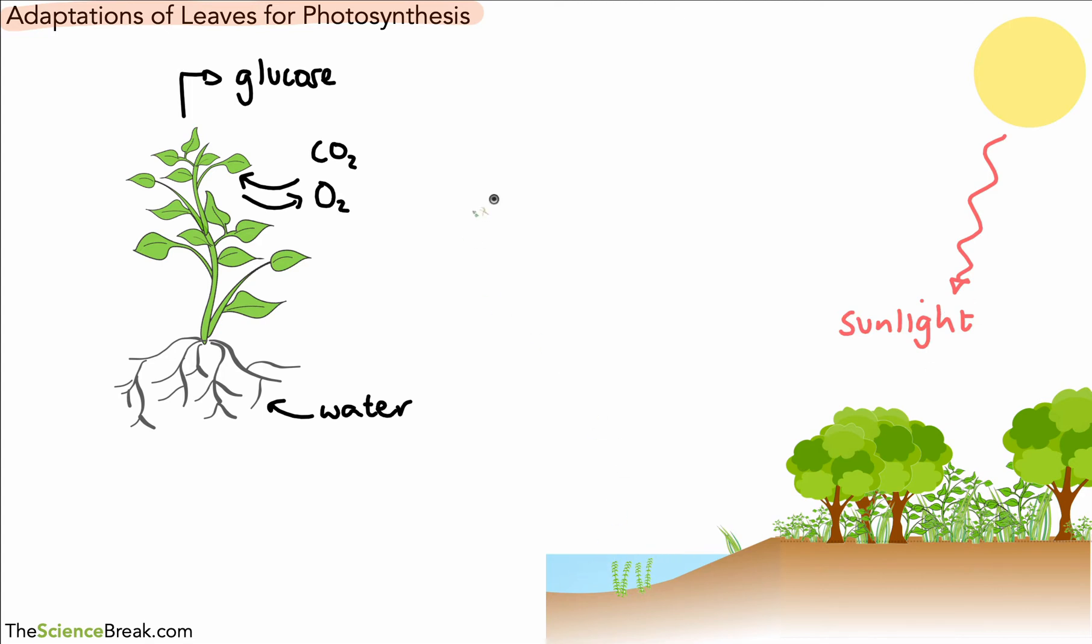Photosynthesis also happens in a type of living thing called algae, and those can be found in water. Carbon dioxide diffuses in from the water because there is carbon dioxide in water, and any oxygen produced goes into the water as bubbles of oxygen gas, and you might just be able to make out some bubbles there from the algae that's in the pond drawn there.